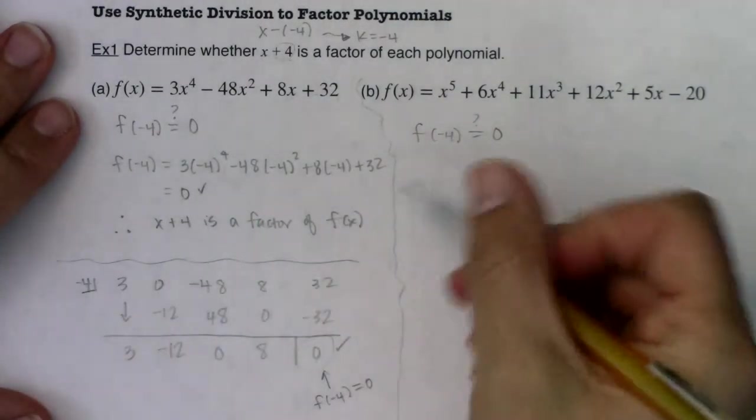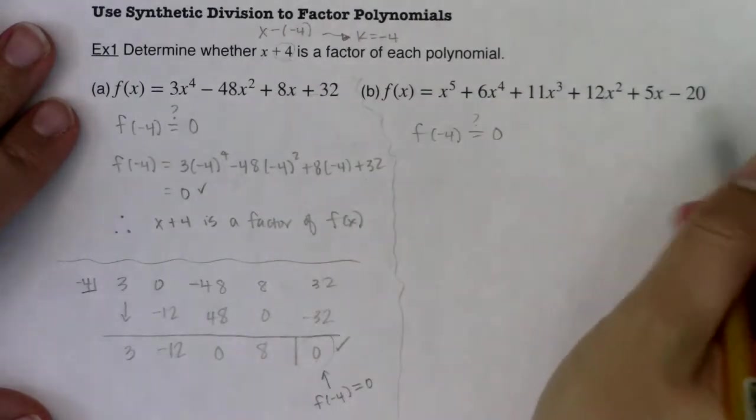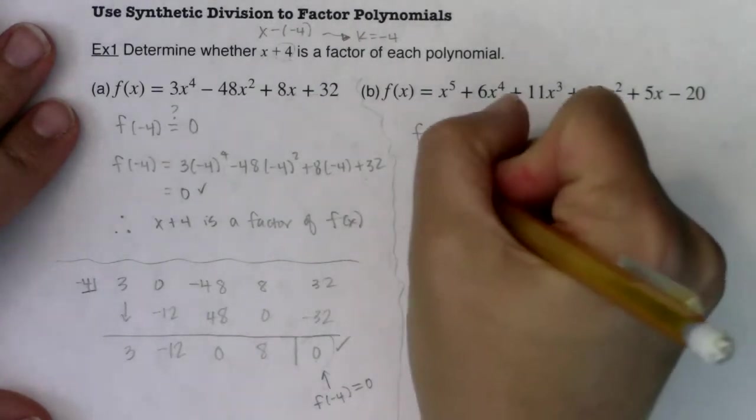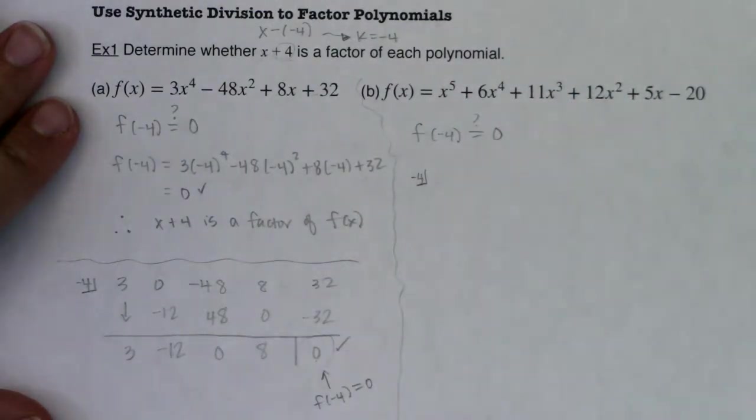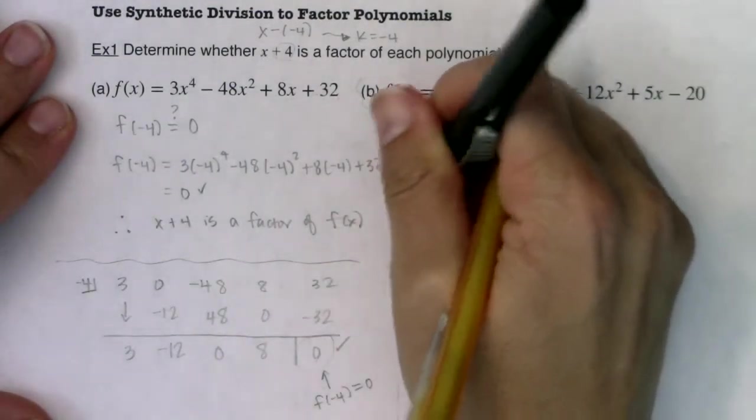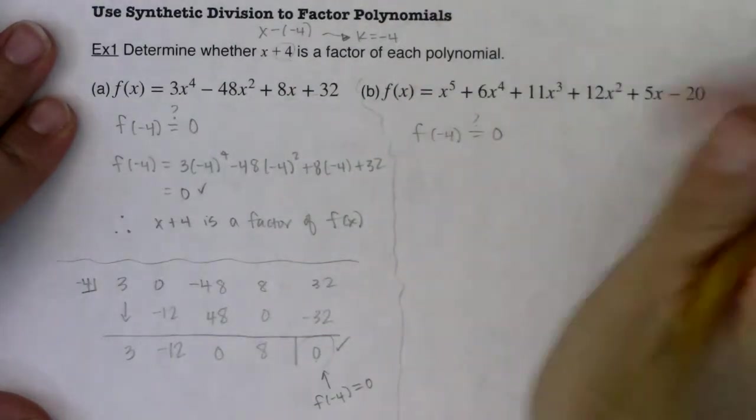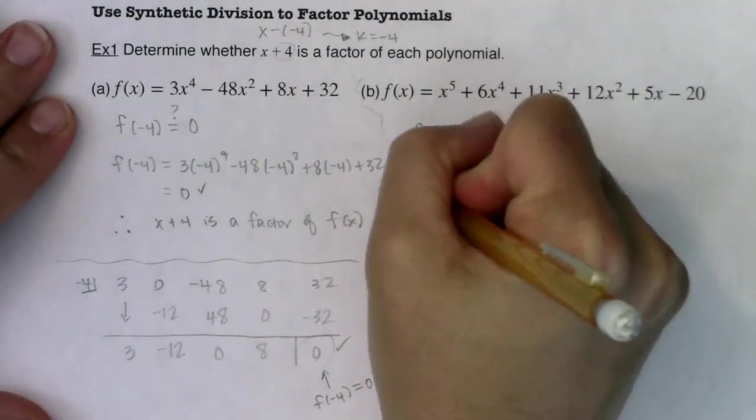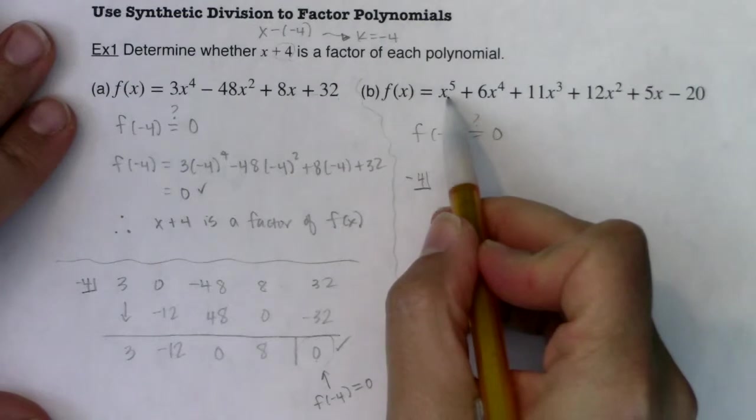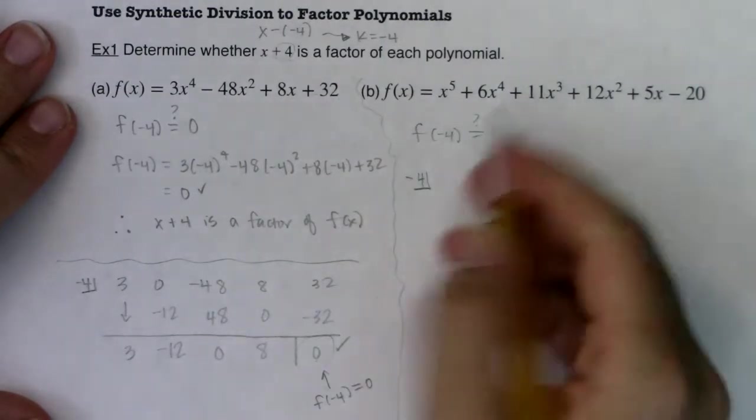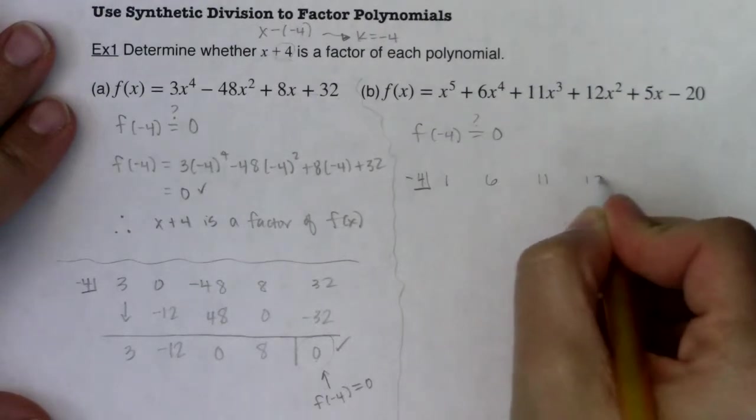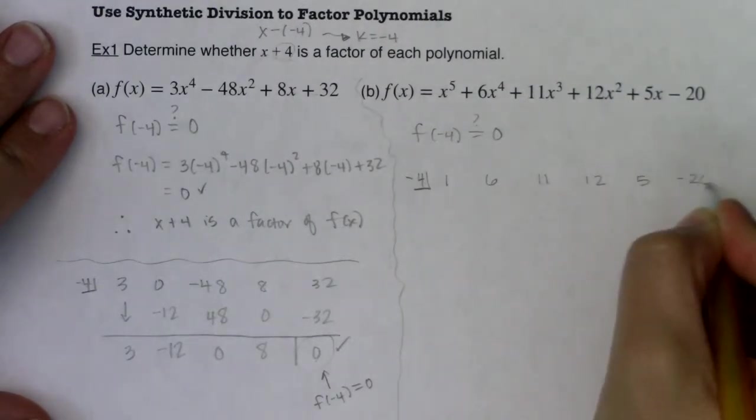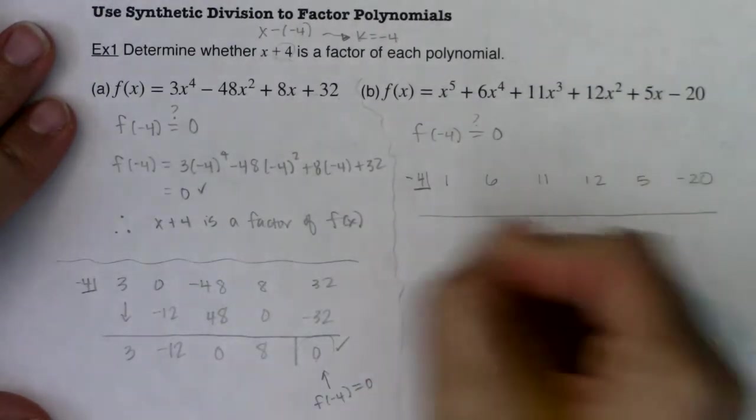Alright, so let's find out. I don't want to plug it in. I mean, I could do this in my calculator, but I'm going to use synthetic division. I just find it so much quicker and easier to use. Let me write this a little bit better. Alright, so if I take a look, I am not skipping over any powers of x. So we've got 1, 6, 11, 12, 5, and negative 20.